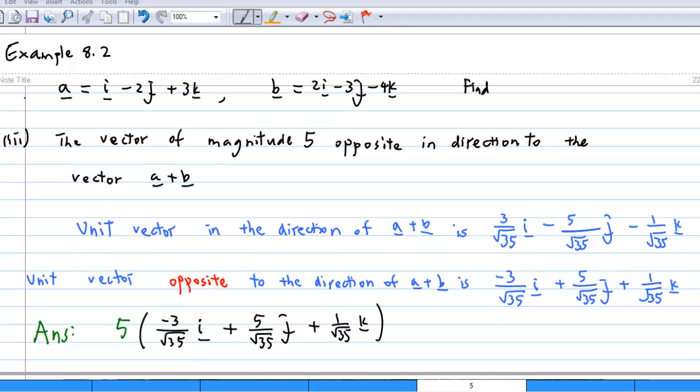Since the unit vector has length 1, the vector of magnitude 5 in the direction opposite to a plus b is 5 times minus 3 over square root 35 i plus 5 over square root 35 j plus 1 over square root 35 k.